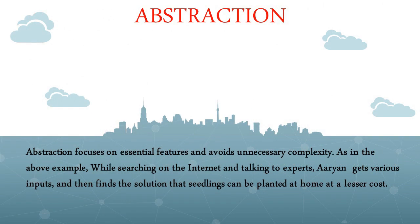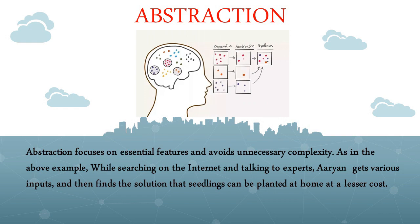The fourth component is abstraction. Abstraction focuses on the essential features and avoids unnecessary complexity. In the above example, while searching on the internet and talking to experts, Aryan receives various inputs, advice, and suggestions. He then filters these to find the key solution: that seedlings can be planted at home at a lesser cost.